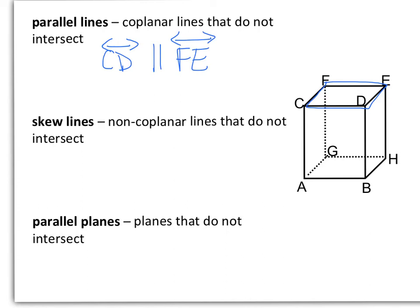Skew lines are non-coplanar lines that do not intersect. So again, we can refer to our top plane CDEF, and then let's look at the bottom plane ABH. We're looking for two lines, so they're not in the same plane. They're not going to intersect, and also they're not parallel. So let's go again with line CD, and then I can say line BH.